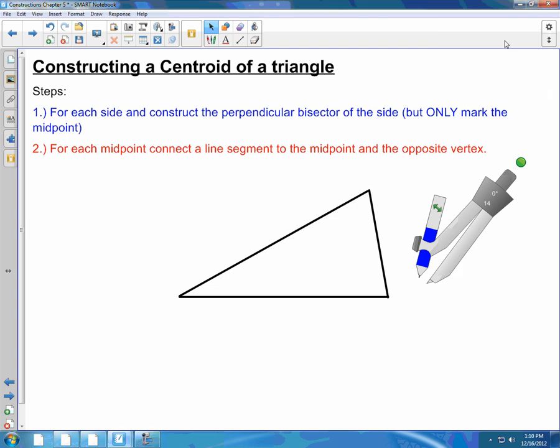All right, so in this video, we're going to construct a centroid of a triangle. Two steps. Step one, for each side, you construct the perpendicular bisector, but only mark the midpoint. Then, for each midpoint, connect a line segment to the midpoint and the opposite vertex.